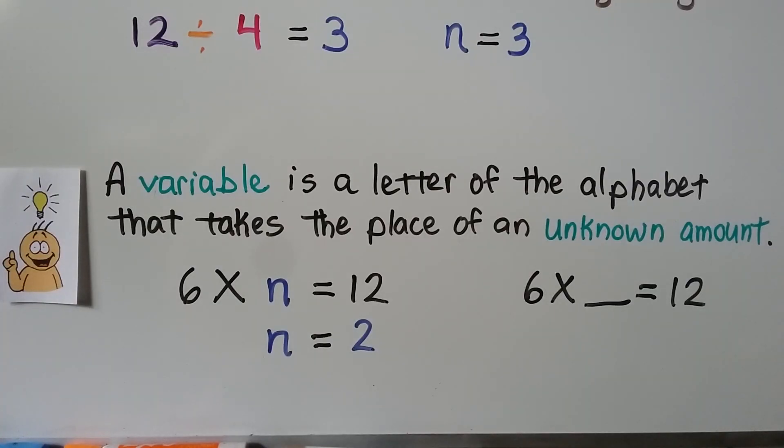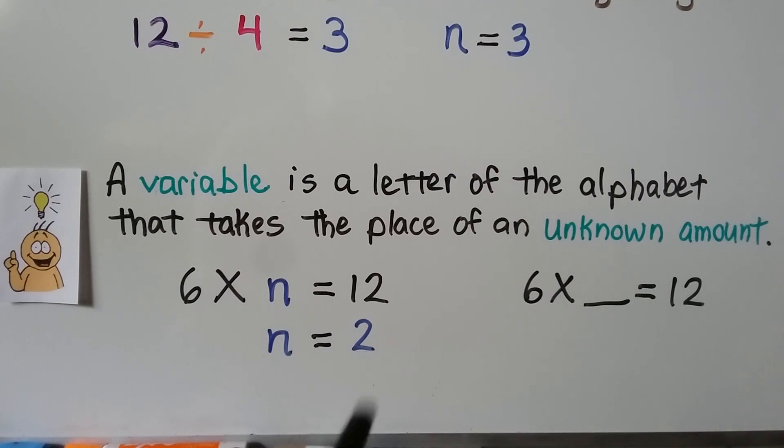Remember, a variable is a letter of the alphabet that takes the place of an unknown amount. 6 times n equals 12. We know n is equal to 2 because 6 times 2 is equal to 12. It's no different than if we had a blank space. We just use a letter to take the place of the unknown number.